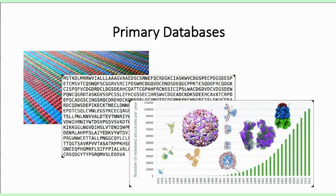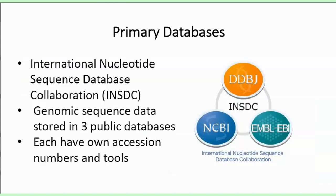In terms of different types of databases, the first and most simple type is the primary database, which contains the most raw version of data available. In bioinformatics, primary databases mostly store simple sequence information — this can be nucleotide sequence information or protein sequence information, as well as structure information for proteins. At the beginning of the sequence era, as sequence data was being generated for many organisms, there was a need for a formalized way in which sequence data was stored and accessed. This led to the formation of the International Nucleotide Sequence Database Collaboration, or INSDC.